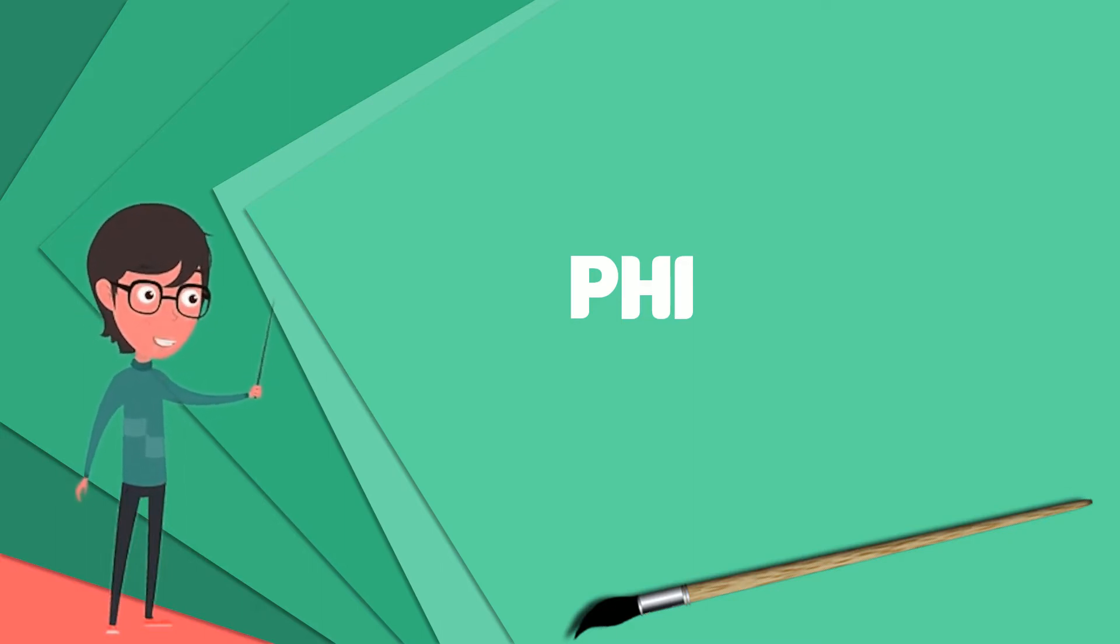In traditional Greek numerals, phi has a value of 500 or 500,000.